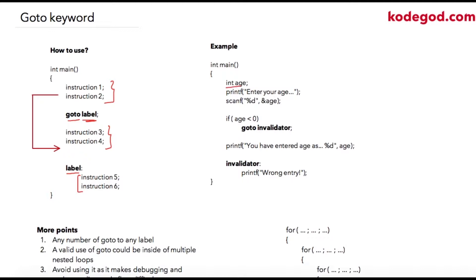Let us take an example. Suppose you have a variable as int, and here you are asking the user to enter an integer which will be stored into the address location of age. Then we add a condition checking whether age is less than zero. If this condition is true, we instruct the compiler to go to the label 'invalidator'. That statement will not get executed; instead, control will be redirected to that label and the printf statement there will be executed.